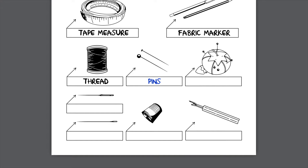A thimble is sometimes used to protect your finger when pushing a needle through the material. This is especially useful when sewing through thick layers of fabric. Label the thimble on your study guide.